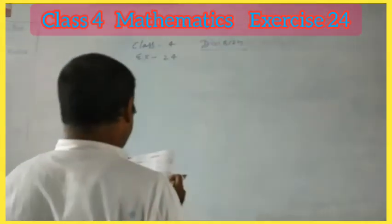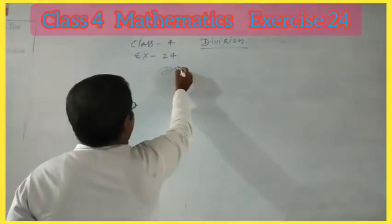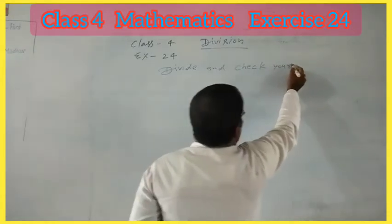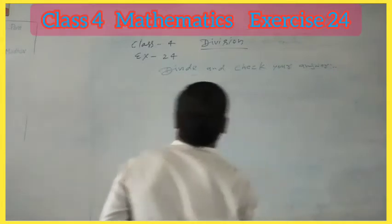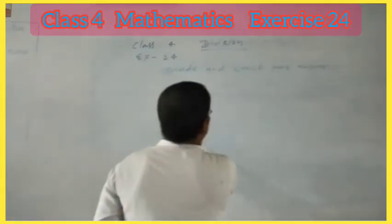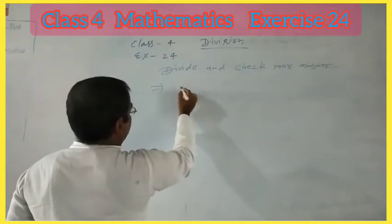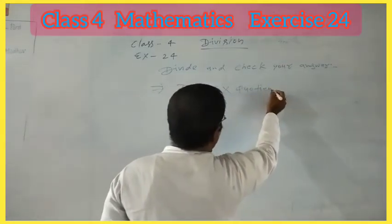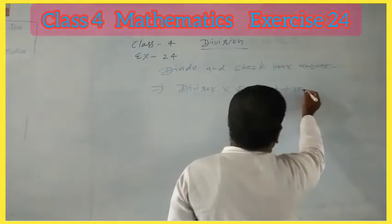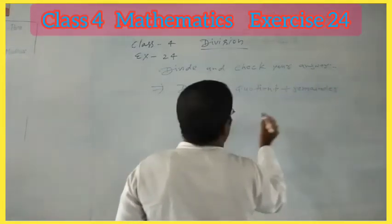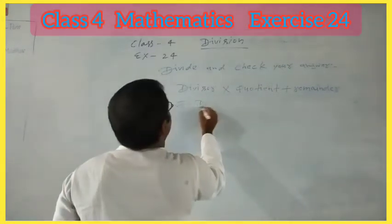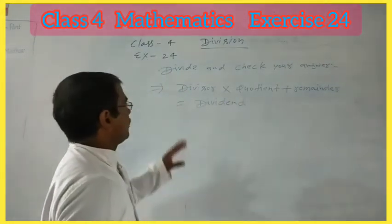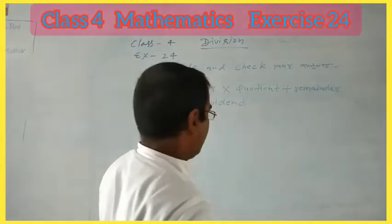Another question: Divide and check your answer. So first of all, I teach you this formula. You guys: divisor into quotient plus remainder equals dividend. I want you all to remember this formula.